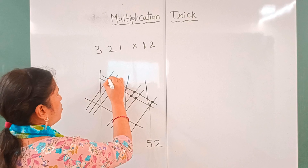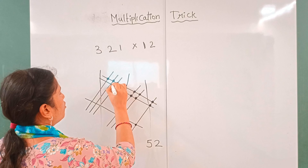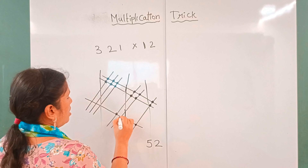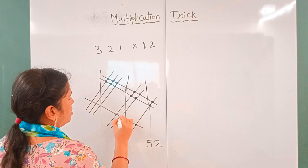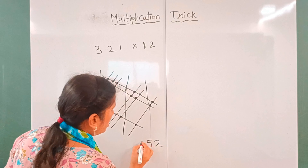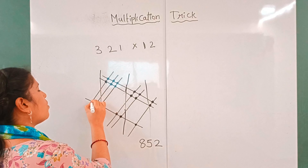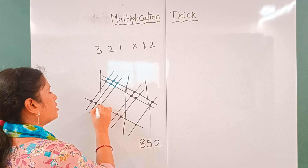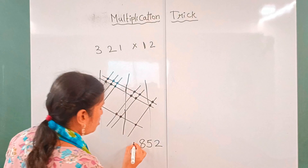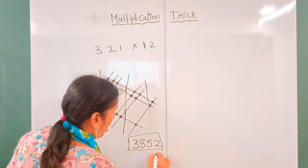Next, counting intersections: 1, 2, 3, 4, 5, 6, 7, 8. Here any intersected are 8 points — so the hundreds place is 8. And here: 1, 2, 3. Three intersections — so the thousands place is 3. This is the answer.